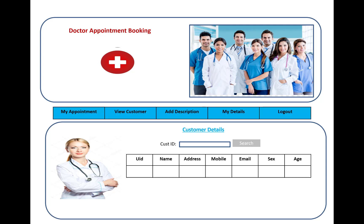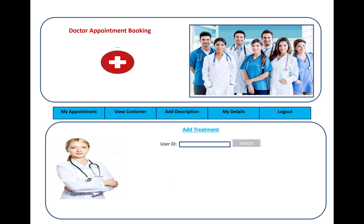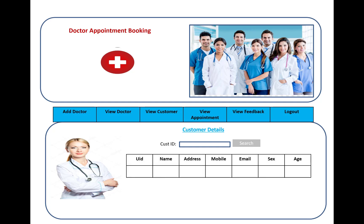In the doctor login, the doctor can see My Appointments, View Customers, Add Description, My Detail, and Logout features. Customer details include user ID, name, address, mobile number, email, sex, and age. The patient treatment history shows user ID, disease, treatment, notes, and date/time. The doctor can also add a treatment by entering user ID, name, treatment details, and notes for a particular patient. The doctor's own detail shows doctor ID, name, address, mobile, and category.